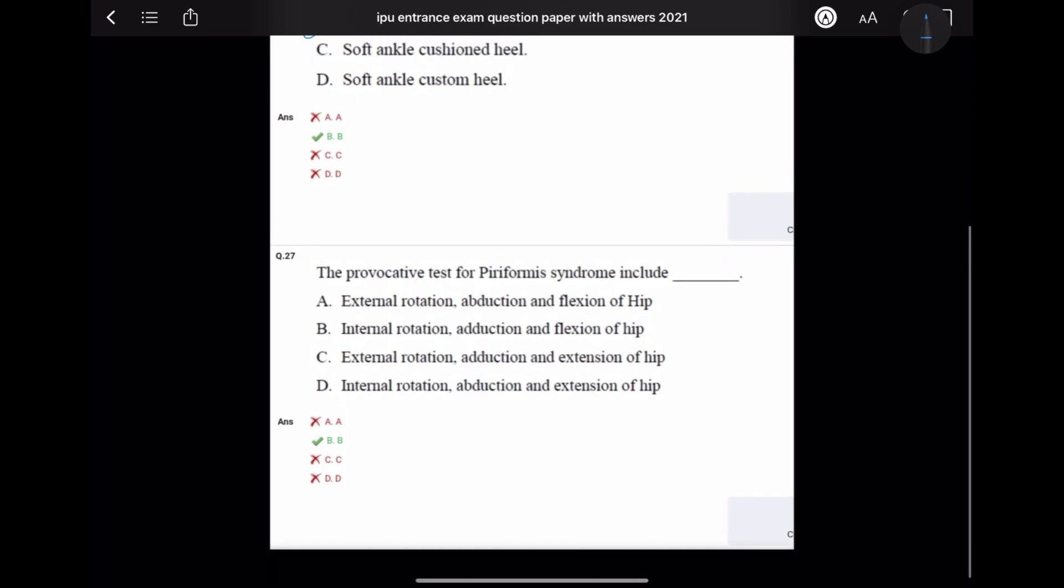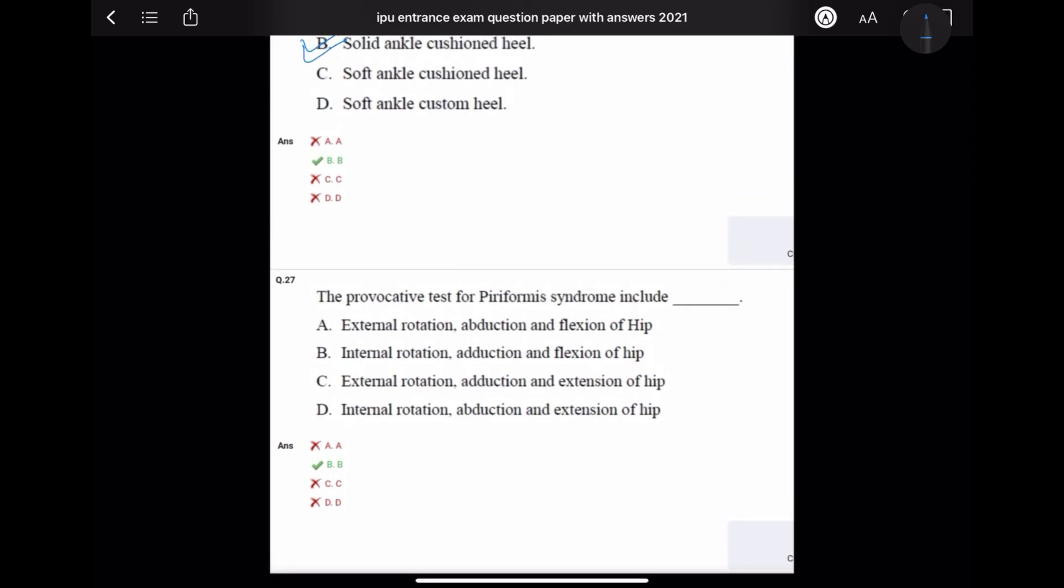Question number 27: The provocative test for piriformis syndrome includes. Piriformis syndrome involves adduction and internal rotation. Piriformis muscle tightness compresses the sciatic nerve causing pain.